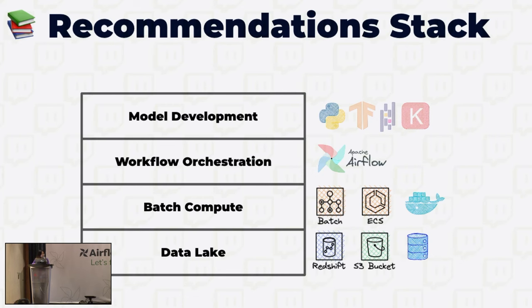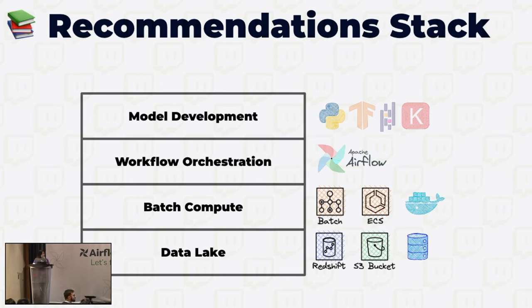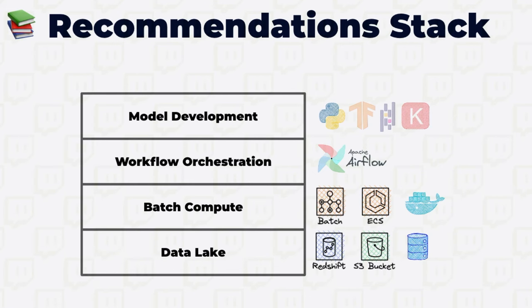Now that we know what recommendations are, let's look at the tech stack for building these models for both candidate generation and ranking. Any machine learning activity needs to start with data — we use Redshift to extract data from our central data lake called Tahoe. We then perform compute tasks such as processing raw features, training a machine learning model, or running evaluation. Our compute is provided by AWS Batch, which executes these tasks as containers. For orchestration, we're using Apache Airflow, and our scientists write these tasks in Python. The model is trained in TensorFlow, and most data transformations happen in Pandas.